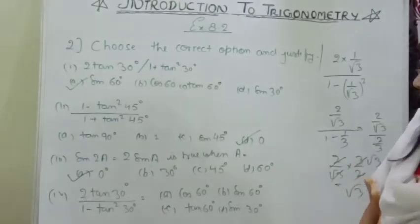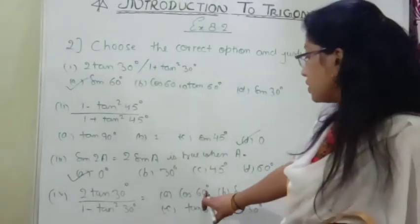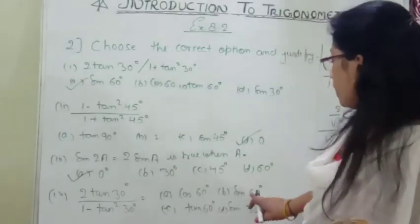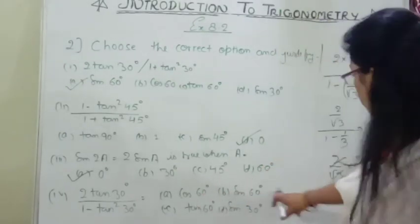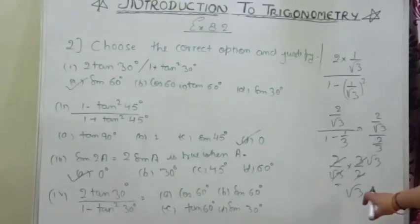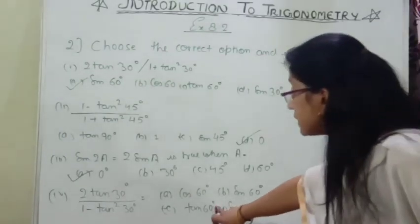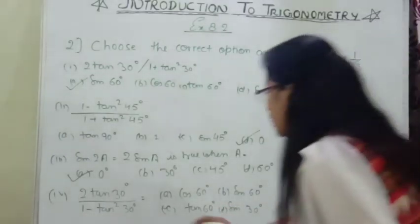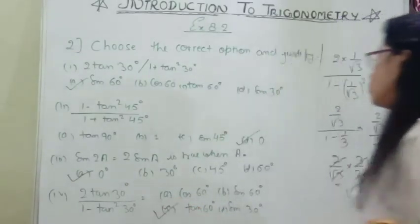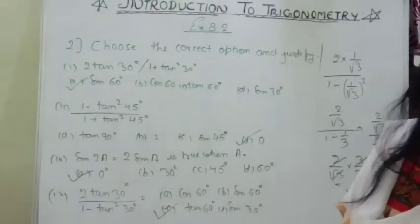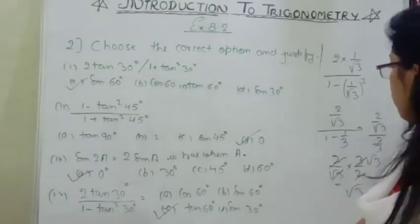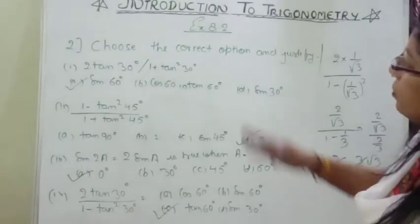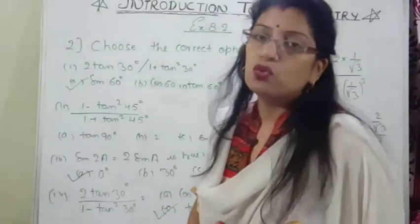We got √3. Now, which trigonometric value equals √3? Cos 60° = 1/2 — no. Sin 60° = √3/2 — but we need √3. Tan 60° = √3. So we got tan 60° = √3. Also, sin 30° = 1/2. So the answer is tan 60°. This was your question number 2.